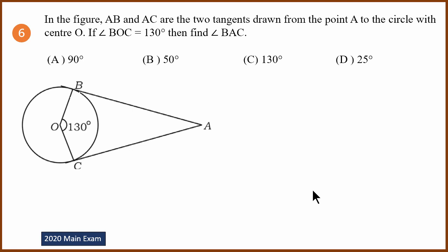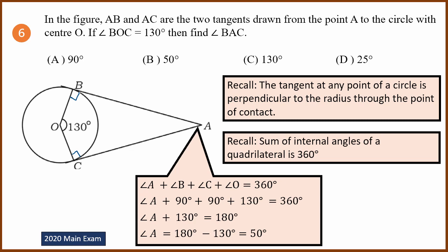Sixth question — a very common two-tangent angle question. In the figure, AB and AC are two tangents drawn from point A to the circle with center O. If angle BOC is 130 degrees, find angle BAC. To solve this, we use the fact that the angles between the radius and tangent at points B and C are each 90 degrees, because the tangent at any point of a circle is perpendicular to the radius through the point of contact.